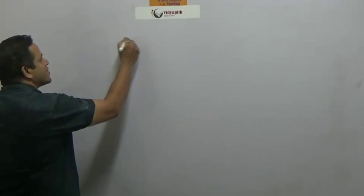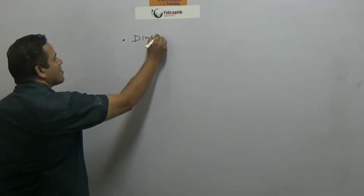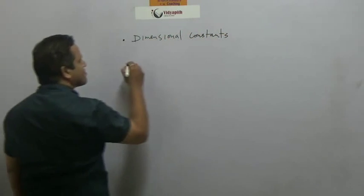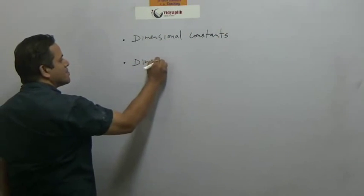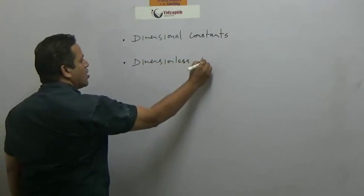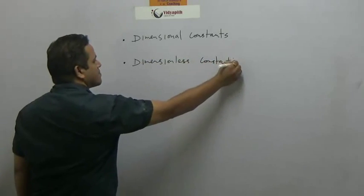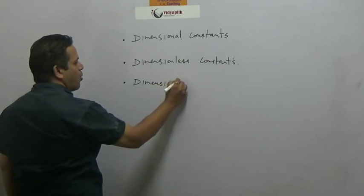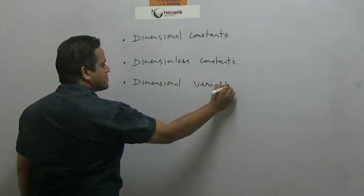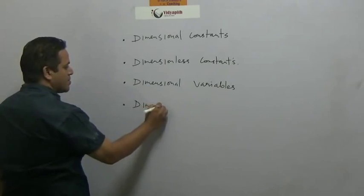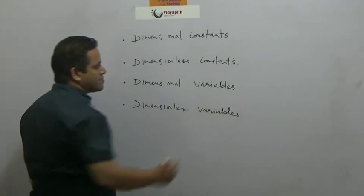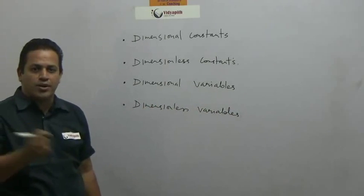Let me put down these names for you. The first is dimensional constants. Second is dimensionless constants. Third is dimensional variables. And fourth is dimensionless variables.